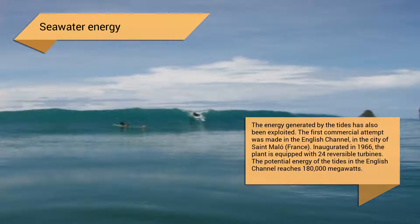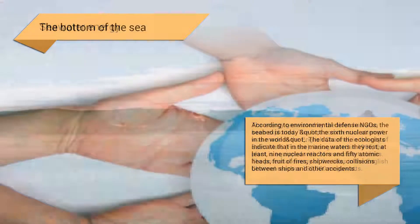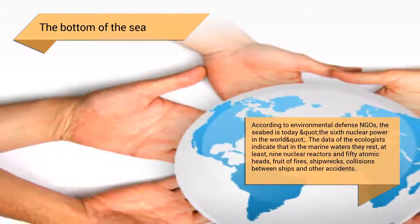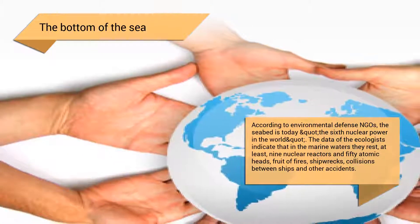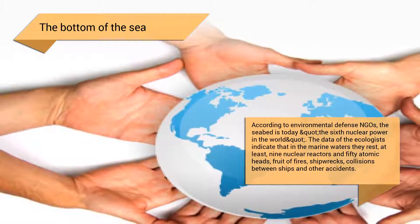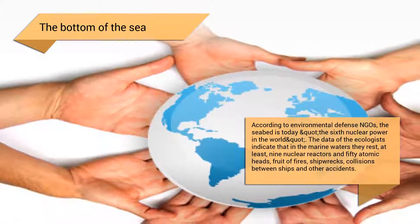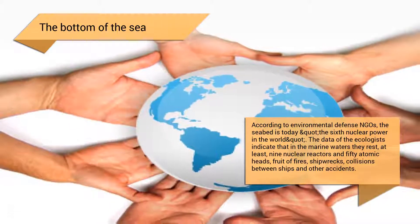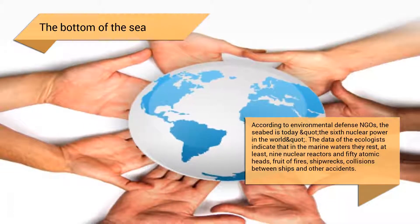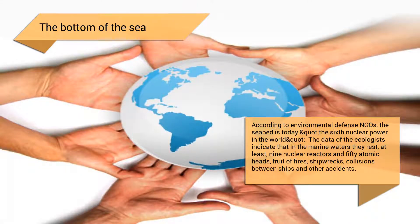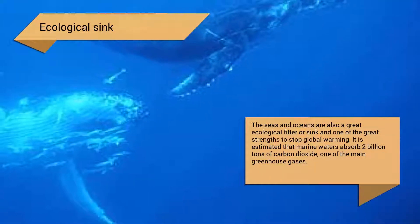The potential energy of the tides in the English Channel reaches 180,000 megawatts. According to environmental defense NGOs, the seabed is today the sixth nuclear power in the world. Ecologists indicate that in marine waters there rest at least nine nuclear reactors and 50 atomic warheads, the result of fires, shipwrecks, collisions between ships, and other accidents.